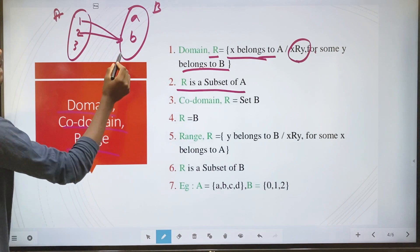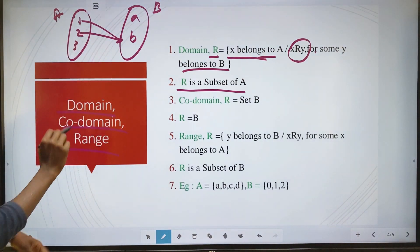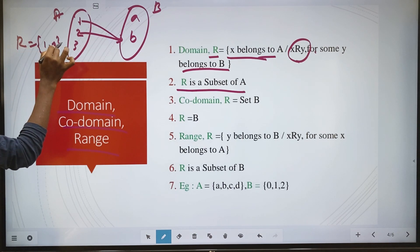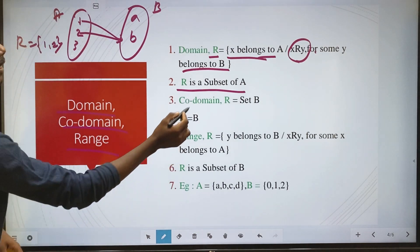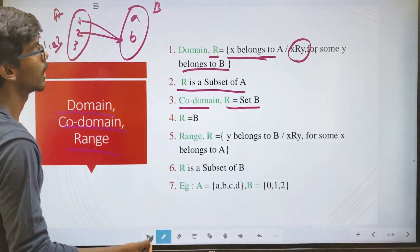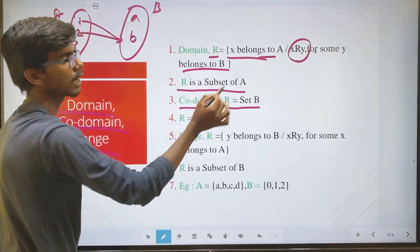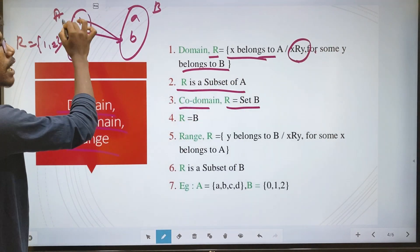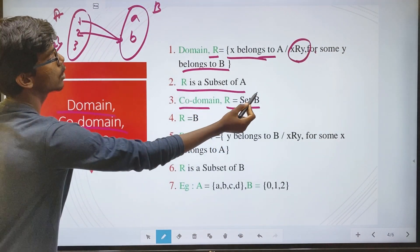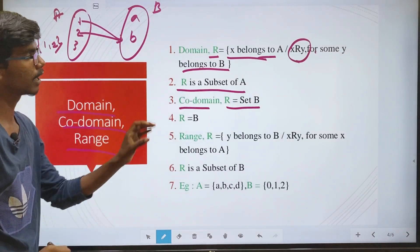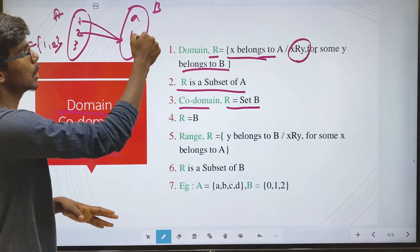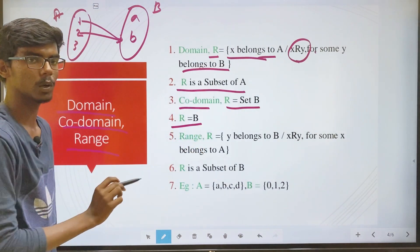R is a subset of A. The domain of R is a subset of A. For example, if R equals {(1,2)}, then 1 and 2 are in the domain, so the domain is a subset of A. Next is co-domain. Co-domain is equal to set B. If x is related to y, the co-domain is the entire set B. Co-domain R equals B.